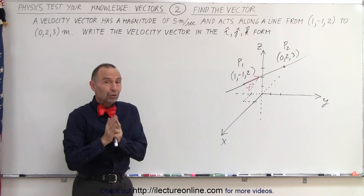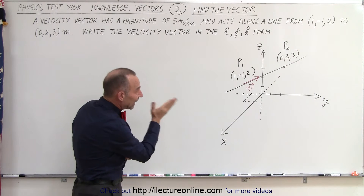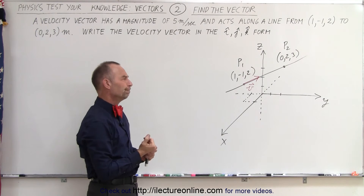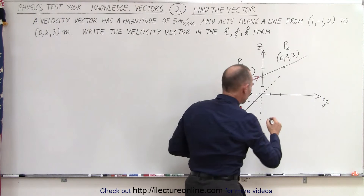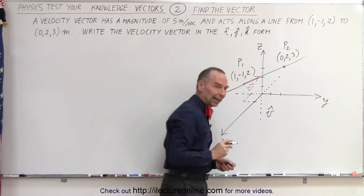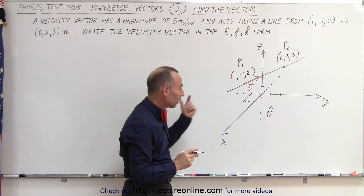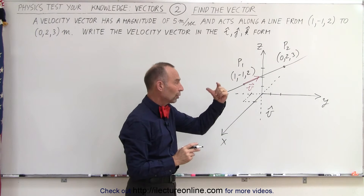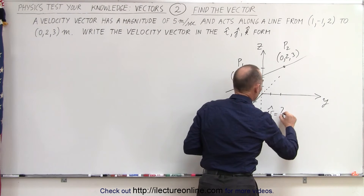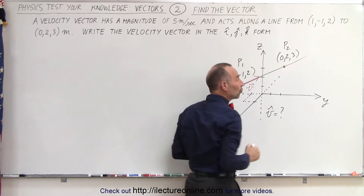Well, first what we should do is find a unit vector in the direction from point one to point two. I'm looking for the v unit vector — a vector in the direction of v with only one unit length. To do that, we're going to find the changes between the x, y, and z values between those two points.